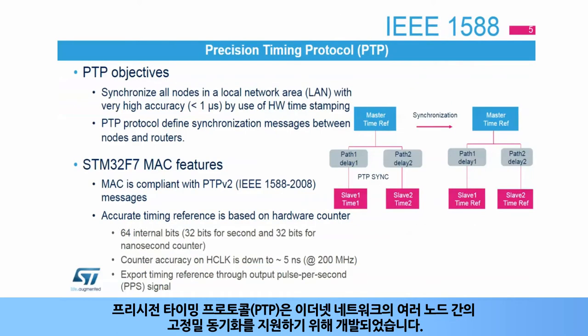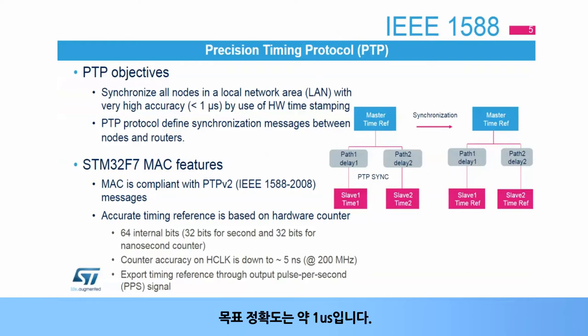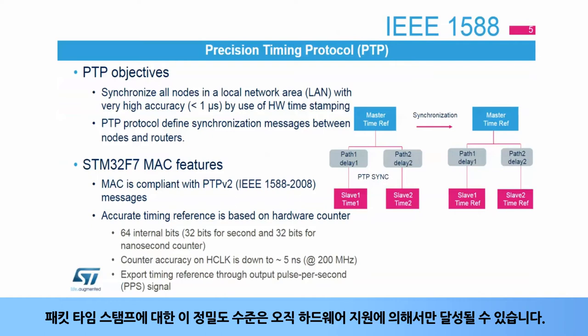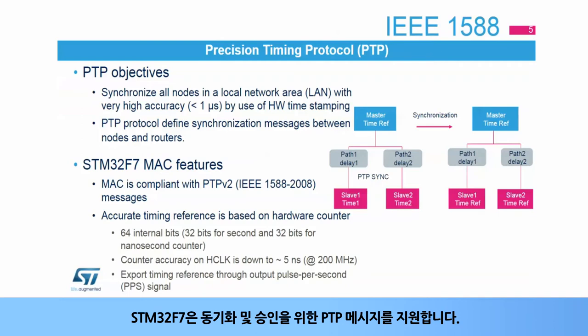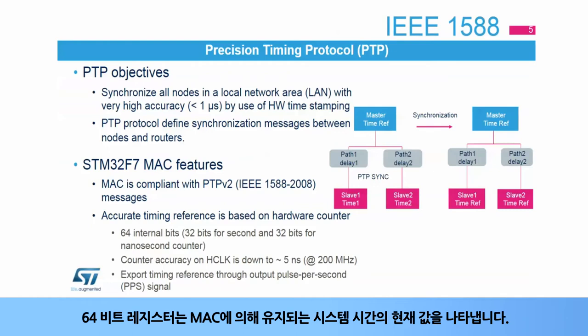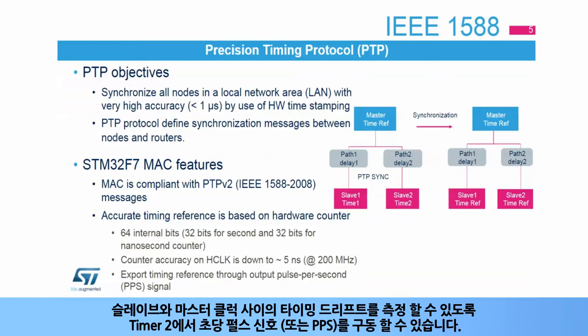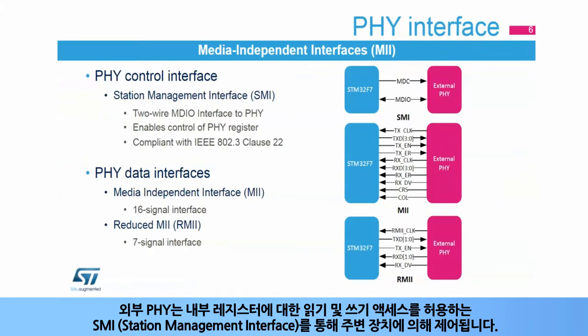The precision timing protocol has been developed to support high-precision synchronization between several nodes of an Ethernet network. The targeted precision is approximately one microsecond. This level of precision can only be achieved by hardware support for packet timestamping. STM32F7 supports PTP messages for synchronization and acknowledge. A 64-bit register indicates the current value of the system time maintained by the MAC. A pulse per second signal, or PPS, can be driven on timer 2 so that the timing drift between slave and master clock can be measured.